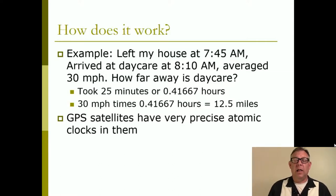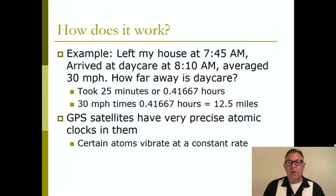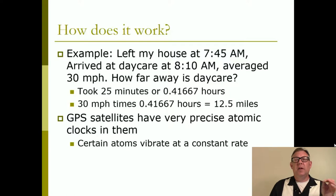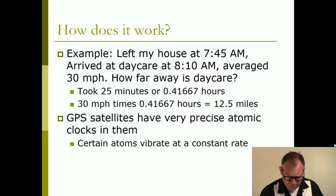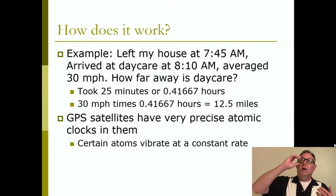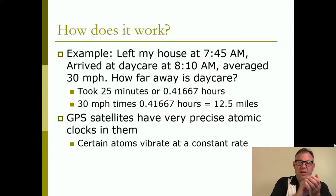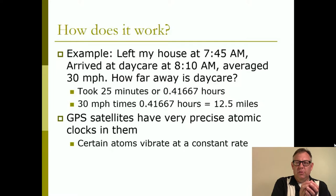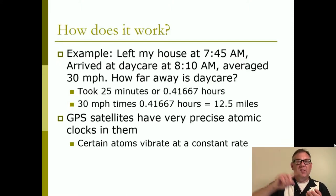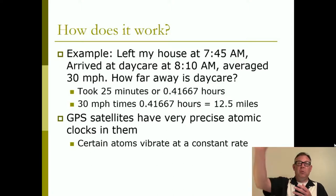The GPS satellites have atomic clocks, which are very precise. Certain atoms vibrate at a constant rate, so you can build a highly precise clock based on atomic vibration. The satellite can tell you very precisely when that signal left. Your GPS does not have an atomic clock, but it is synchronized with the satellite's atomic clock, so it can use the same clock. Thus it can very accurately calculate how long it took the signal to travel from the satellite to the receiver, and precisely determine your distance to that satellite.